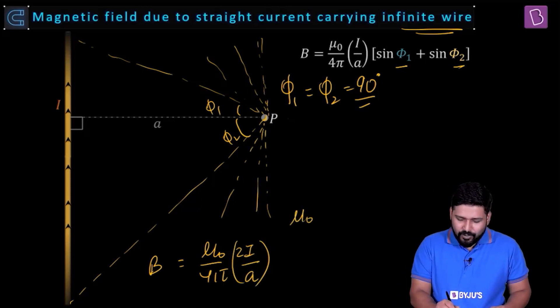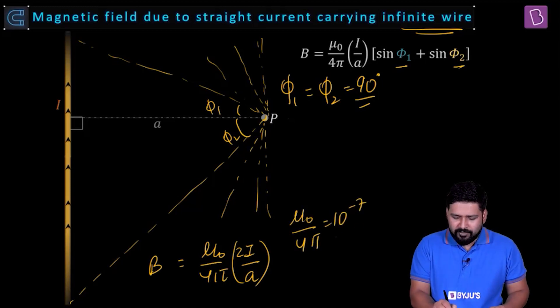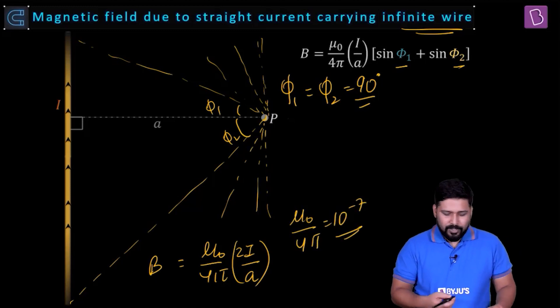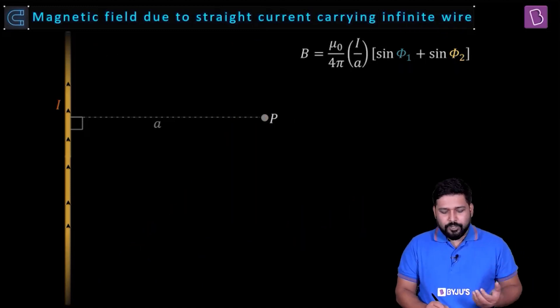Always remember the value of μ₀ by 4π is equal to 10 to the power of minus 7. Whenever you require to substitute this, you can directly substitute it. All right. When the values are given, this is how we do.